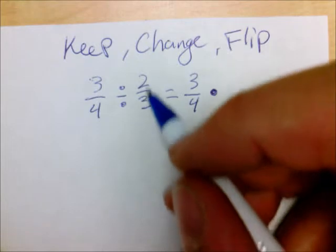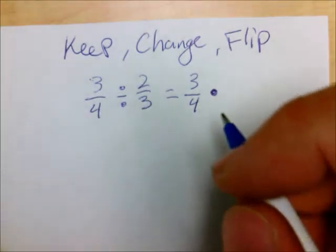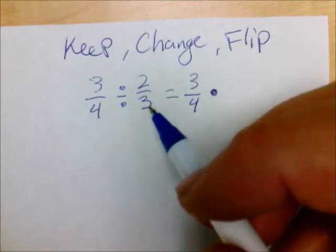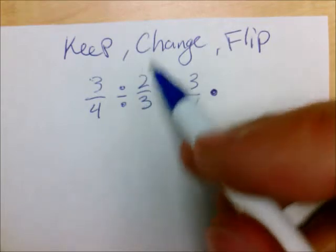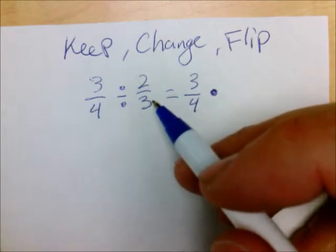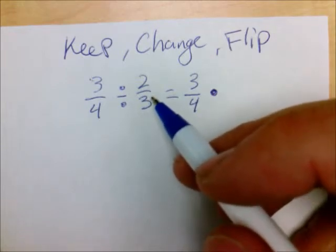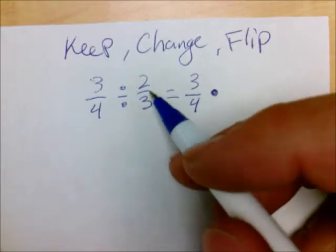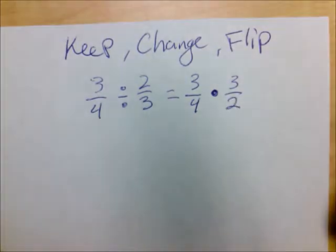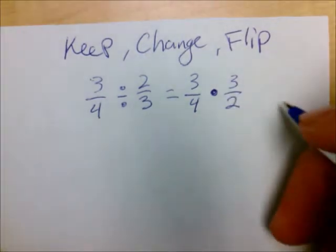I'm going to flip two thirds. Now this is a vocab word that I like to give the students. It's actually called not just flipping it but taking the reciprocal of it. That's a very big word that they're going to hear a lot throughout their educational career in math. So I like to introduce it now if they haven't heard it already, the reciprocal. So we're going to flip two over three to three over two. And now it's exactly yesterday's lesson.